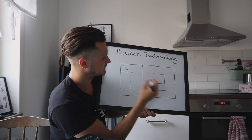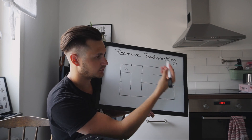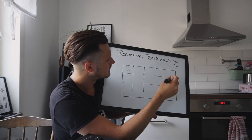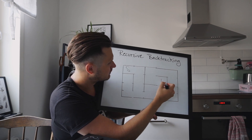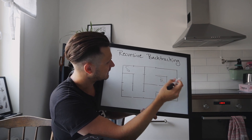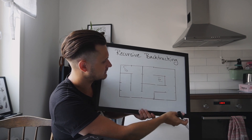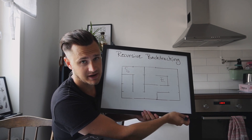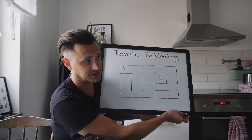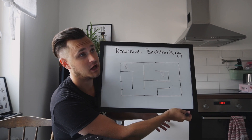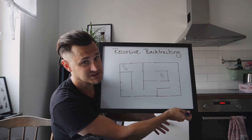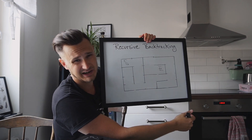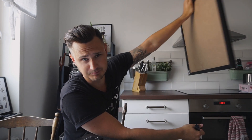And we have our maze. We have a start and you can pick the end anywhere. I would probably put the end here. And so there you have it — we've successfully generated a maze using the recursive backtracking algorithm.